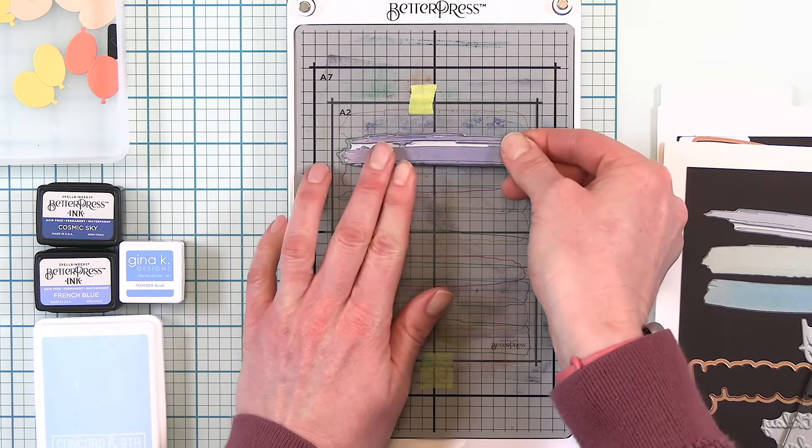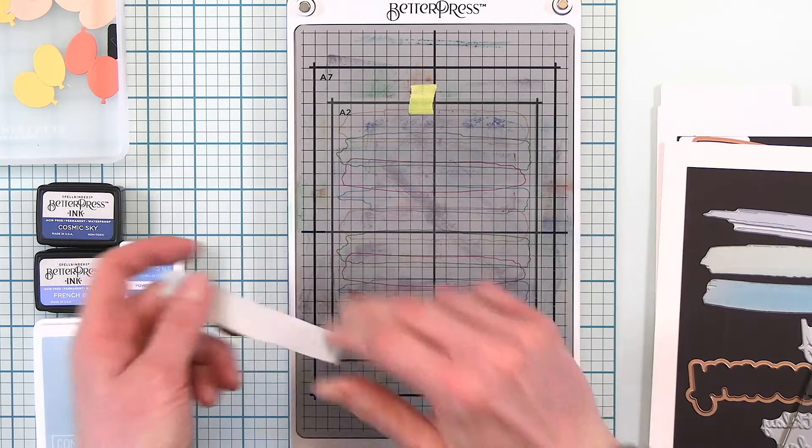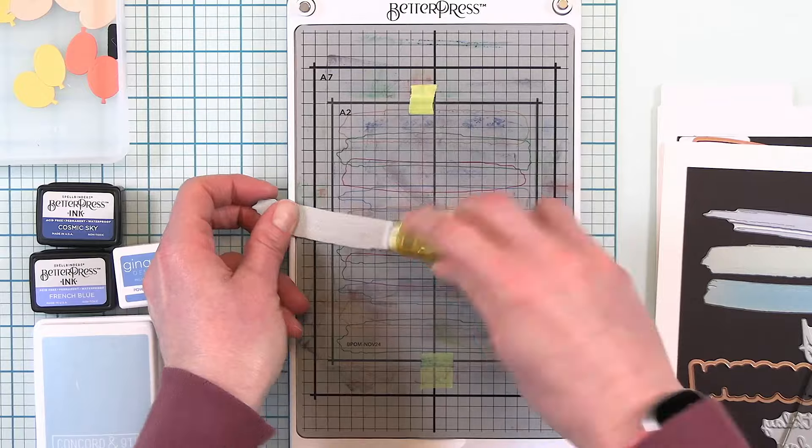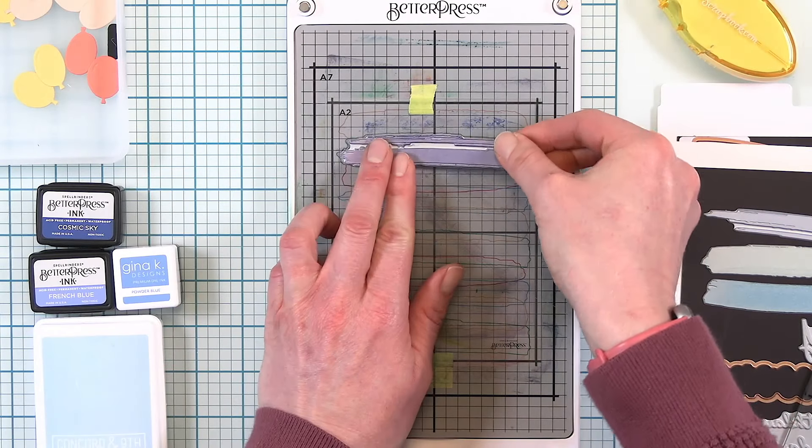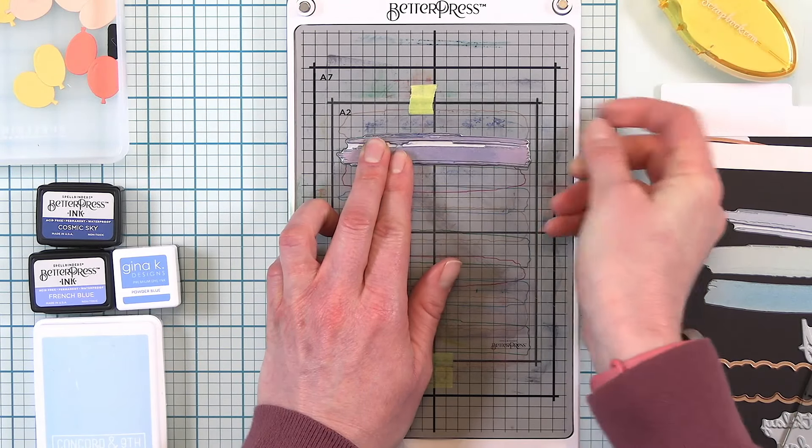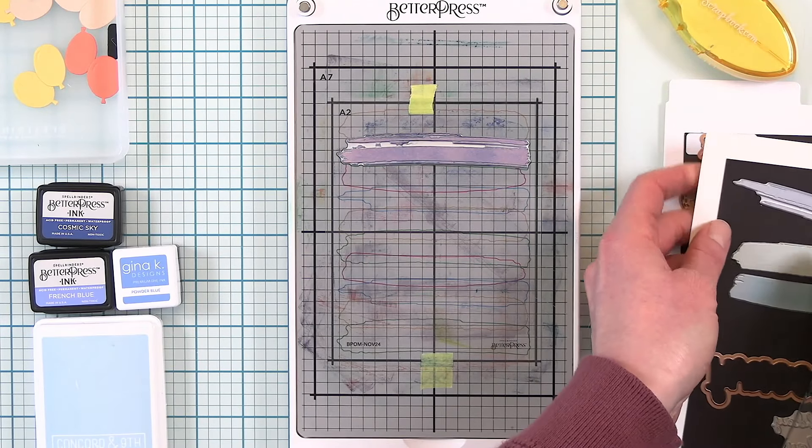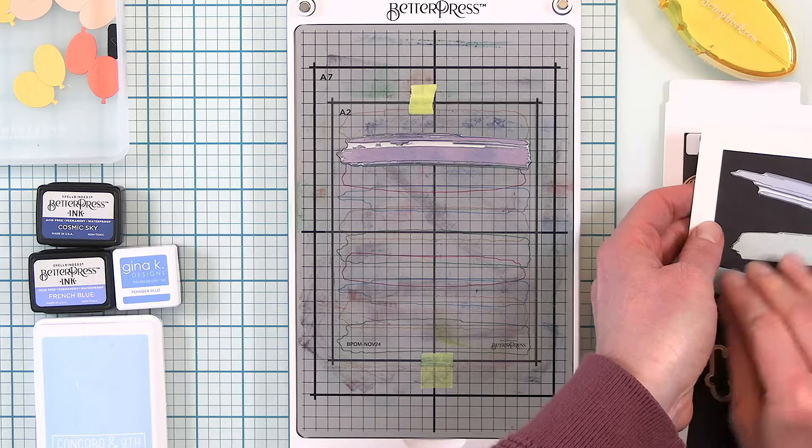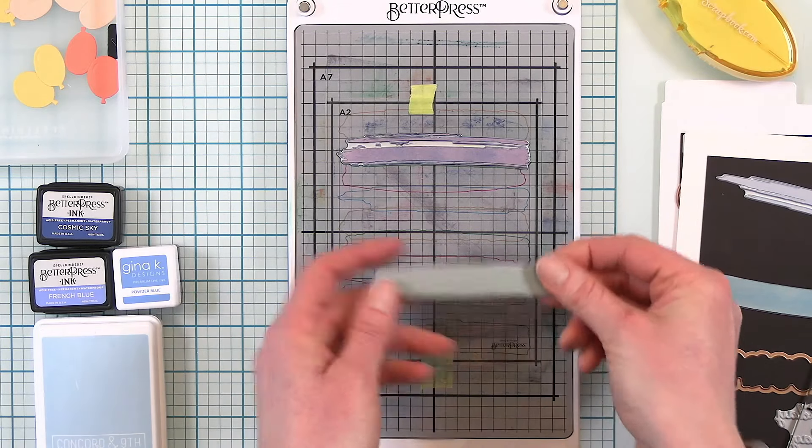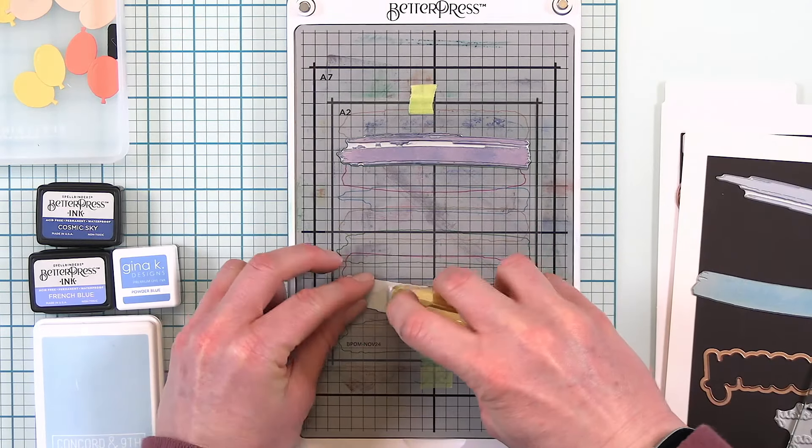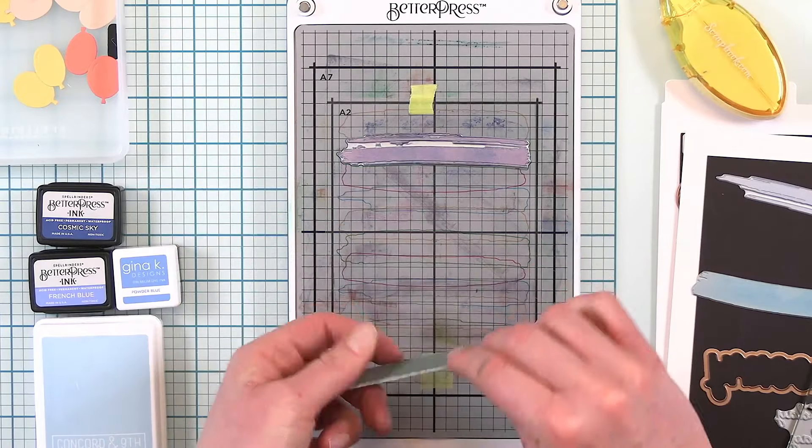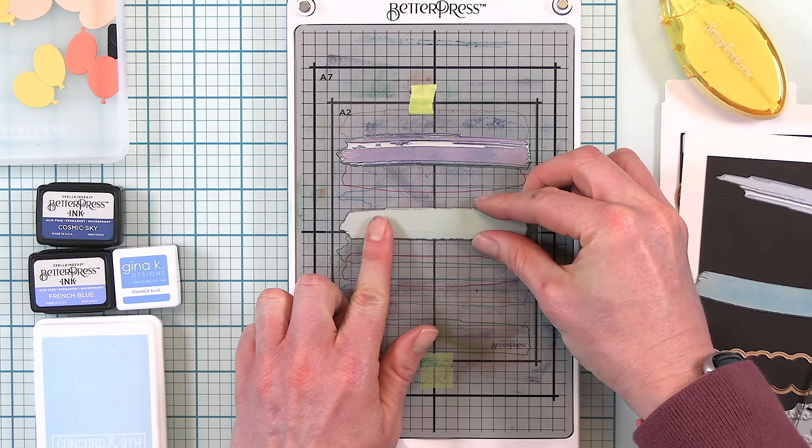Next I'm going to put my paint swatches on matching them up with the lines on the template. Now I am using some adhesive, it's a dotted adhesive runner and that is because I have found that I am very heavy-handed when I put my ink on and so sometimes I will move my Better Press plates a lot and so by doing this I'm making sure that these are going to stick to my template and not move if I have to re-ink them.